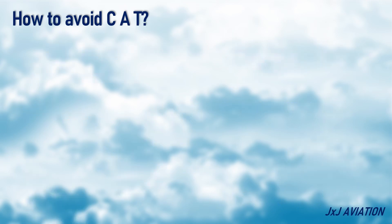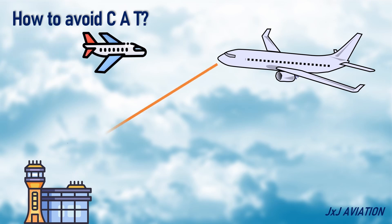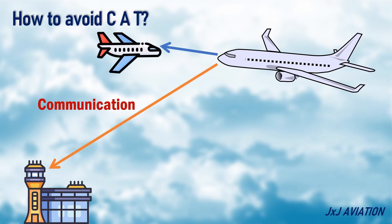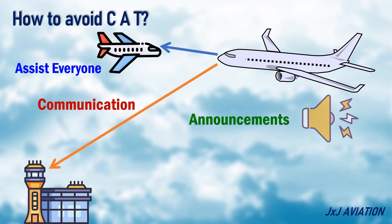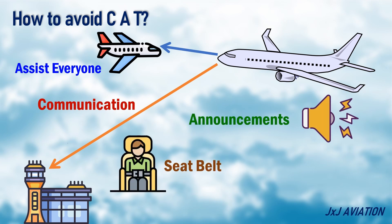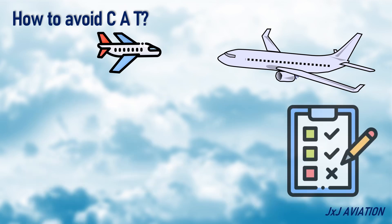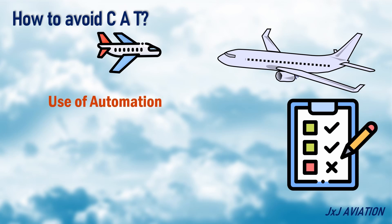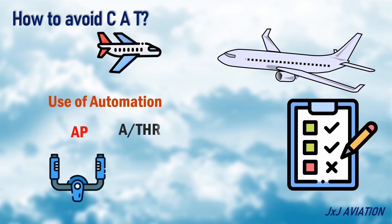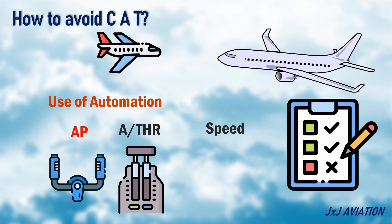Communication with ATC and other aircraft regarding turbulence can assist everyone flying on the same route. On-board announcements and keeping the seatbelt sign on will help in keeping the cabin crew and passengers safe. Different aircraft have different procedures with reference to the use of automation, such as autopilot and autothrust, and the speed at which the aircraft should be flown.